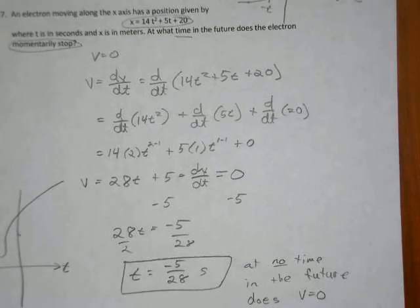So v equals 2 times 14, which is 28 times t to the 2 minus 1, which is just t, or t to the first power. And that is 5 times t to the 1 minus 1, which is t to the 0th power. And anything to the 0th power is just 1. So I'll leave it out. So you had points for recognizing that you had to take the derivative, points for actually computing the derivative. And then points for recognizing that you had to set this equal to 0 to find the point at which the particle momentarily stops.